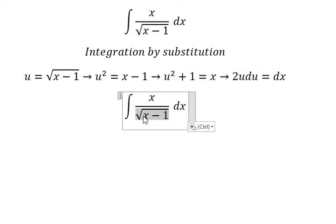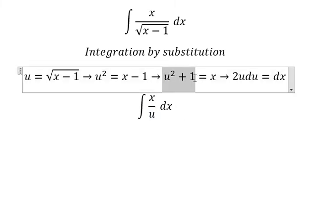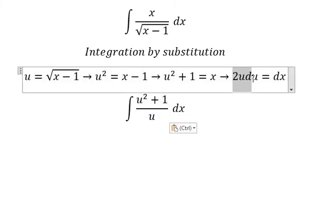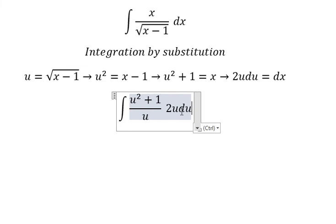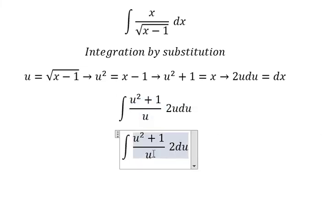The square root we change to u. x we change using this expression. u divided by u cancels. We put the 2 in front.